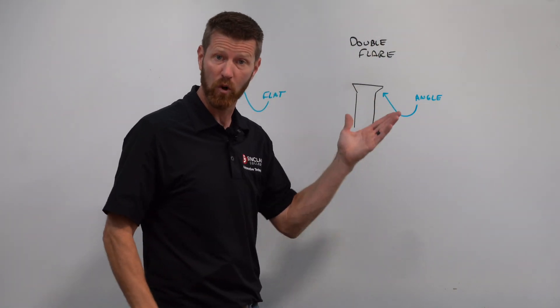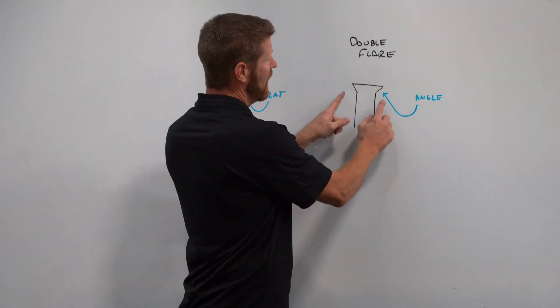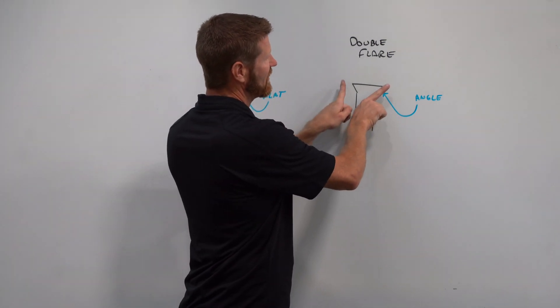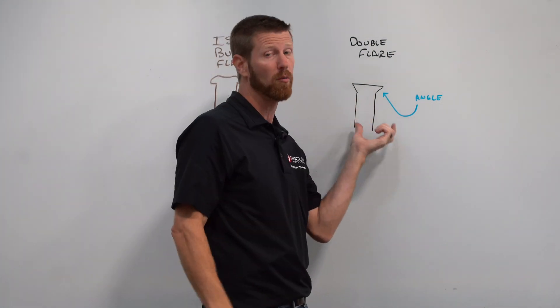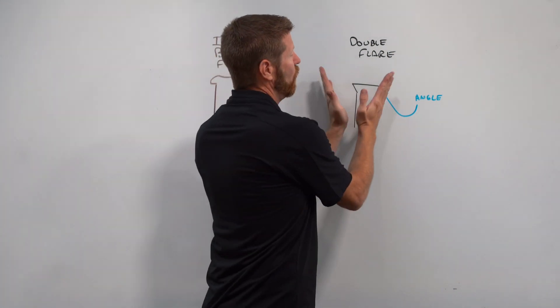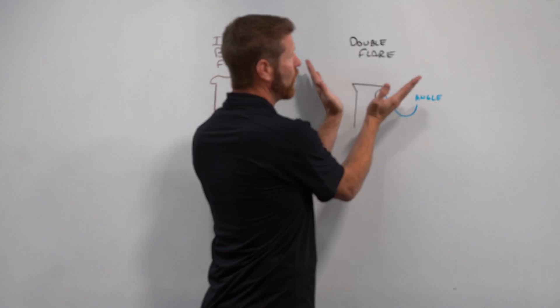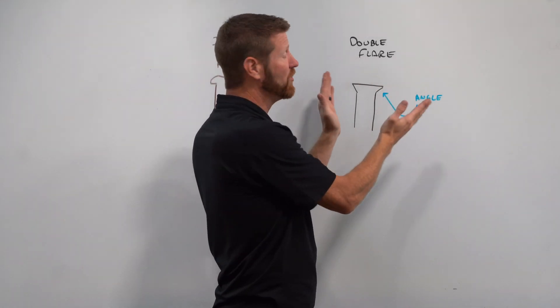The double flare, the one we're going to do today, if you notice, the end of the brake pipe is kind of flared out. We're using double wall steel pipe. When we flare this out, rather than just a single flare, we're going to do a double flare.